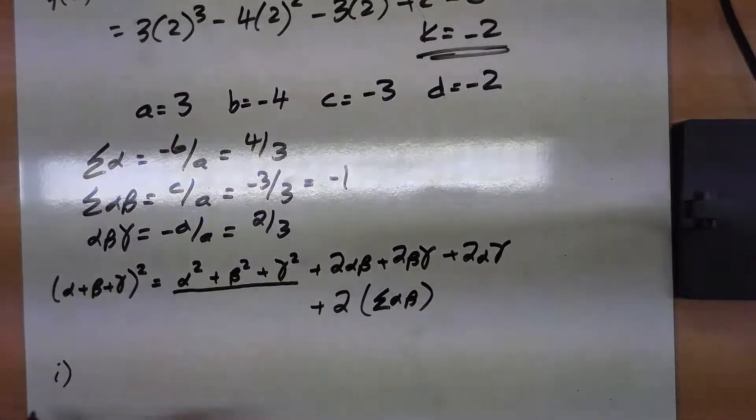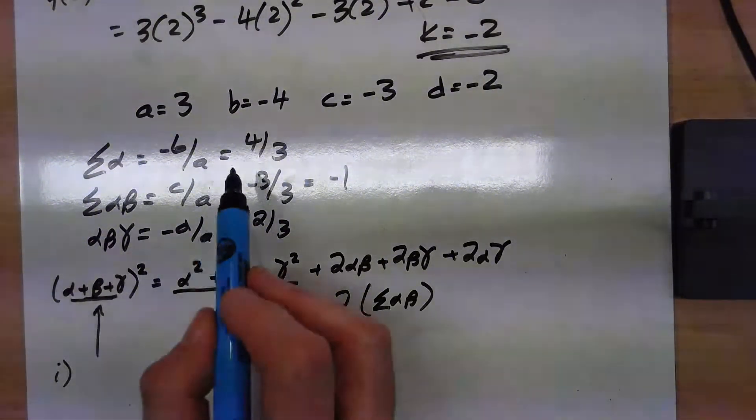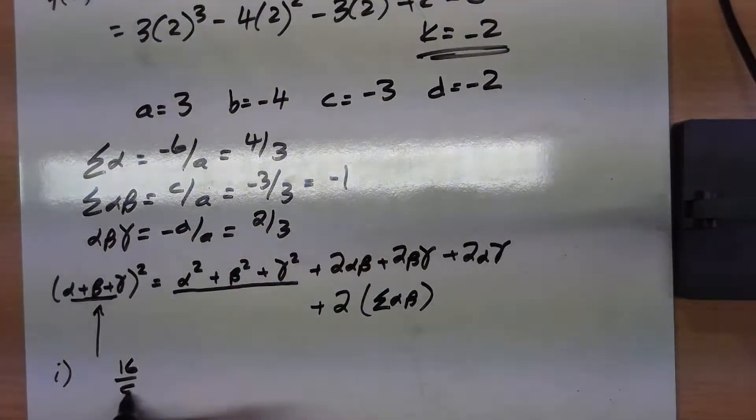Right, the question says part A, what is this? This is the three of them added up together, squared. So that is 16 over 9.